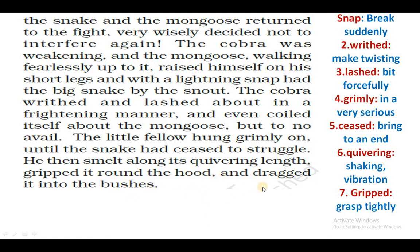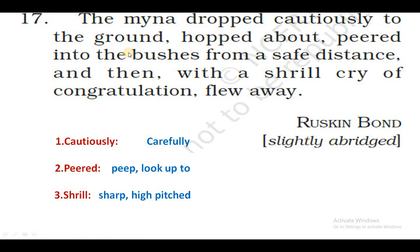The cobra writhed and lashed about in a frightening manner, and even coiled itself about the mongoose, but to no avail. The little fellow hung on grimly until the snake had ceased to struggle. He then smelt along its length, gripped it round the hood tightly, and dragged it into the bushes. The myna dropped cautiously to the ground, hoped about, peered into the bushes from a safe distance, and then with a shrill cry of congratulations, flew away. Cautiously — carefully. Peered — to look or peek; jhankna. Shrill — sharp, high-pitched; unchi awaaz.